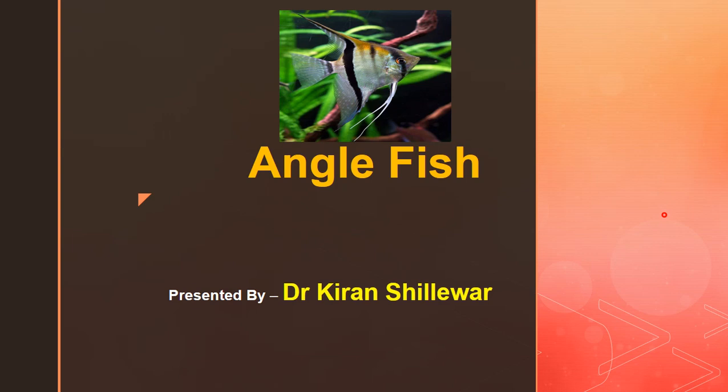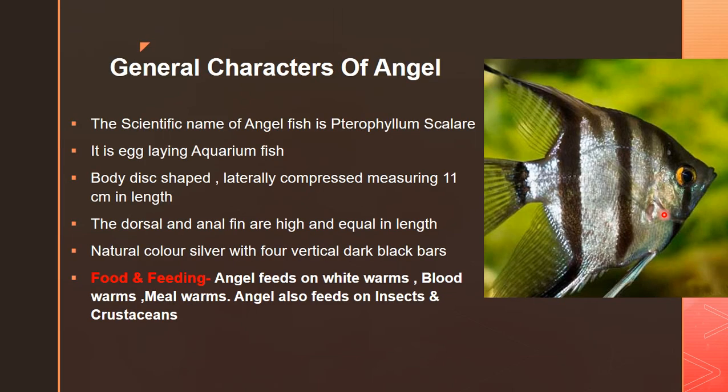The number one example is the angelfish — it is an egg layer fish. This is about its general characters. First of all, we know about the scientific name. The scientific name of angelfish is Pterophyllum scalare — 'P' is silent. It is very important for MCQ purposes. It is an egg-laying aquatic fish, meaning the female gives eggs. It is called an oviparous fish.